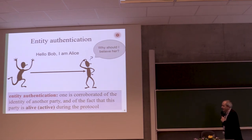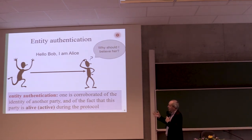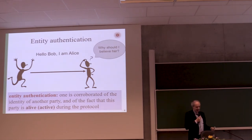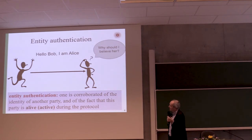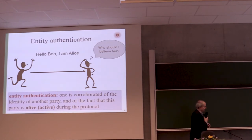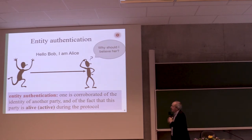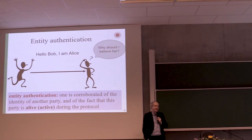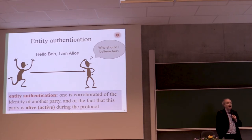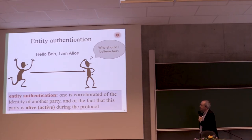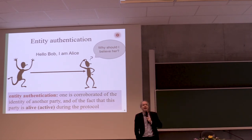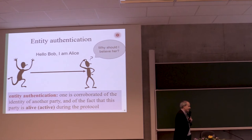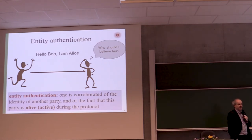A more formal definition from the Handbook of Applied Cryptography — which is a free book you can download; it's a bit out of date but the basic concepts have not changed. Entity authentication means you're convinced of the identity of another party and the fact that this party is alive and active during the protocol. In fact, as we will see, passwords don't even provide this, because a password can be intercepted and resent. You don't even know whether it was sent recently or just captured and replayed.